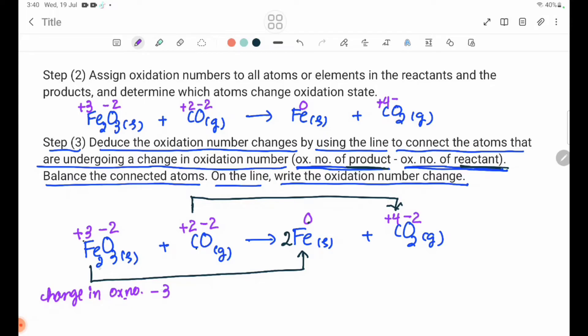If we have Fe, then we have 2 times minus 3 is equal to minus 6. Minus 6 is reduced.